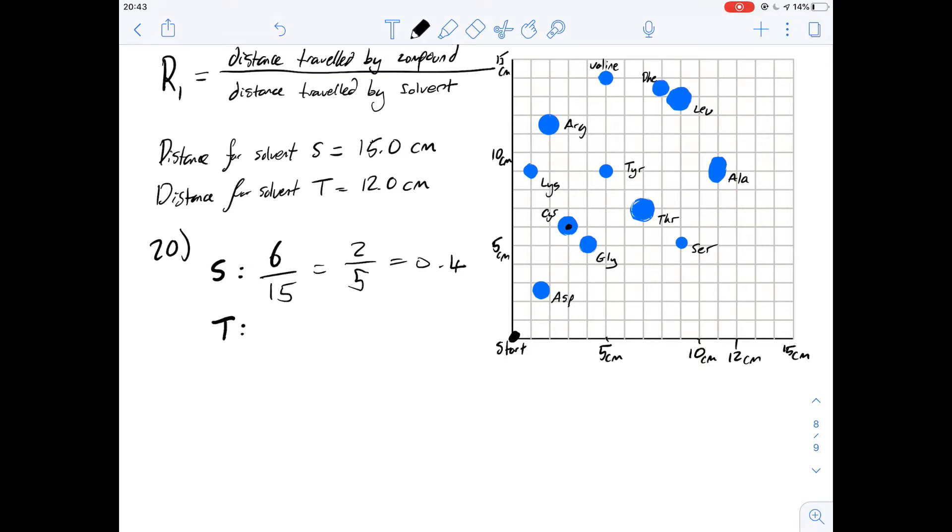But just for completeness we can mark out what it is in T. So the distance travelled in solvent T is going to be 3 squares and it moved along 12 centimeters and that gives us a ratio of 1 over 4 which is 0.25 and that just confirms that the answer for this one is C. Just a reminder that solvent S is moving up in this direction and solvent T is moving along in this direction and it only gets to 12 centimeters here.